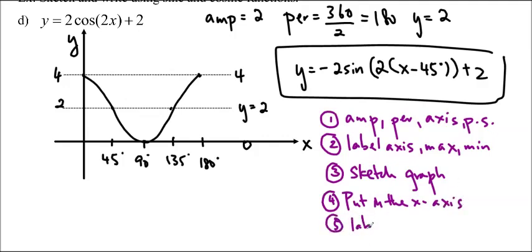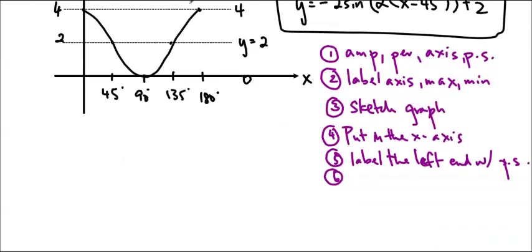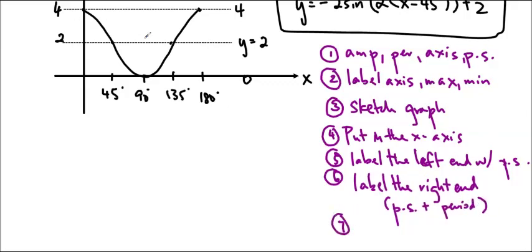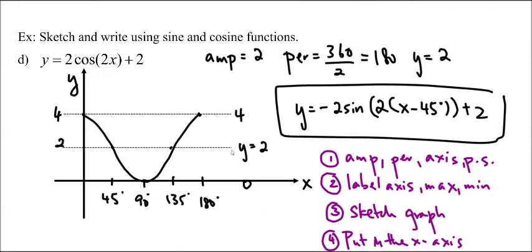4, you put in the x-axis. 5, label the left end with phase shift. 6, we're going to label the right end, the two endpoints are now labeled, which is phase shift plus the period, whatever the period is. And then 7, you can label all the x-values. You do the period divided by 2, and then you do the period divided by 4, and that gives you each of the intervals. So that is how you do it. Bring any questions you have to class, and I will see you soon. Have a good night.